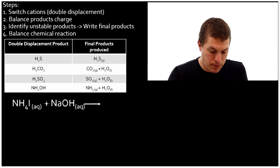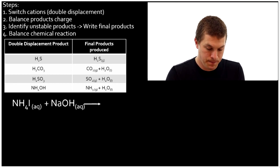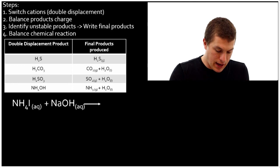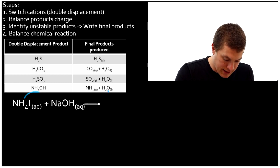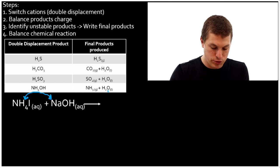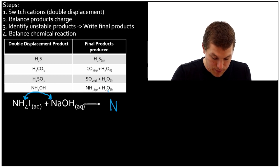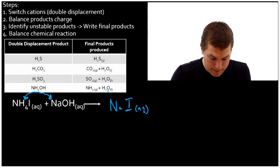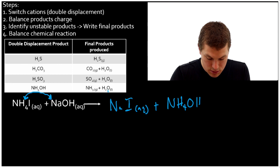Here we have ammonium iodide combining with sodium hydroxide. First step, switch the cations. Ammonium is a cation. NH4 is positive. So that means when we switch the cation, we're gonna get sodium iodide, which is aqueous, plus NH4OH, also aqueous.